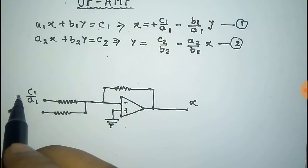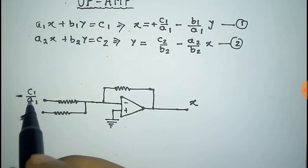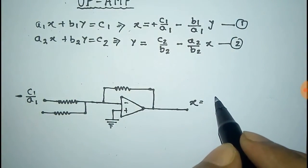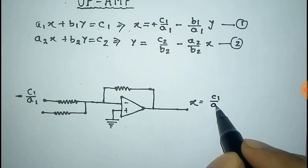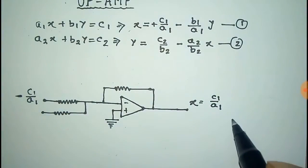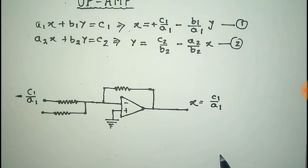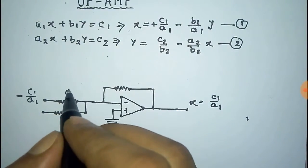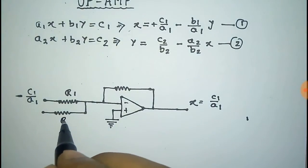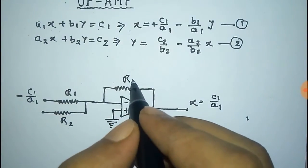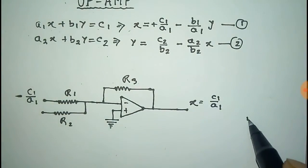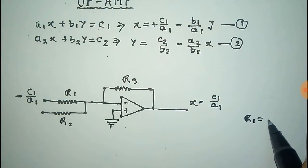You can see there is a positive sign before c1/a1. Since this is an inverting op-amp, to get +c1/a1 at the output we have to give −c1/a1 at the input, and the sign will be changed to +c1/a1. Now for the resistance ratio: r1, r2, and r3 are given. Since nothing is multiplied with c1/a1, r1 = r3.